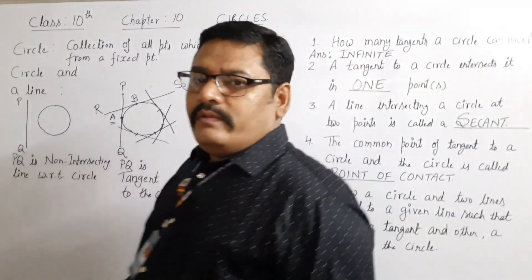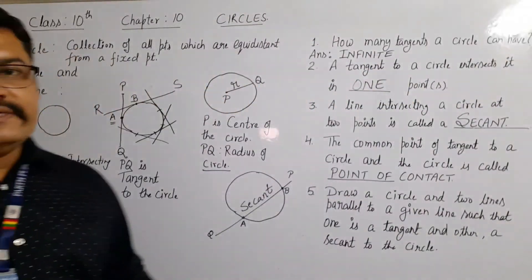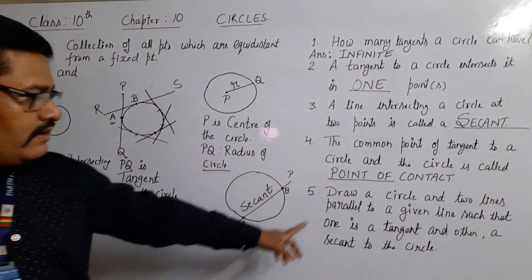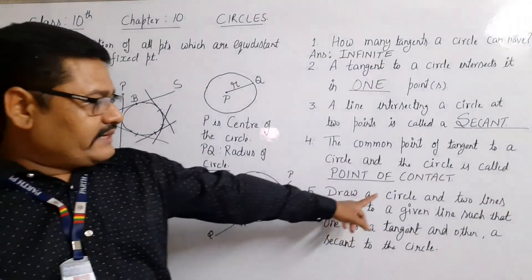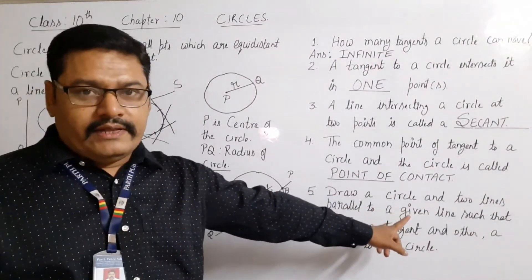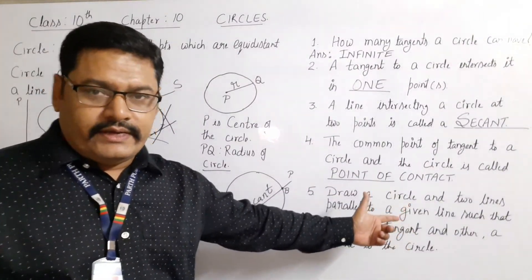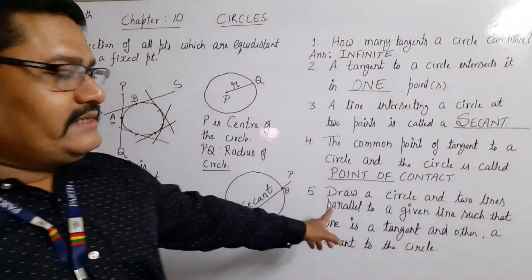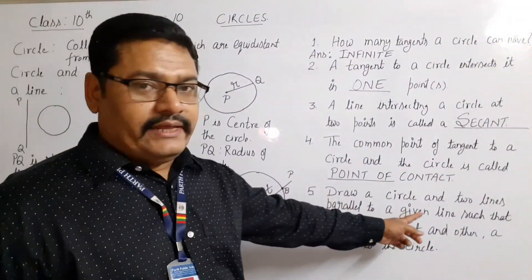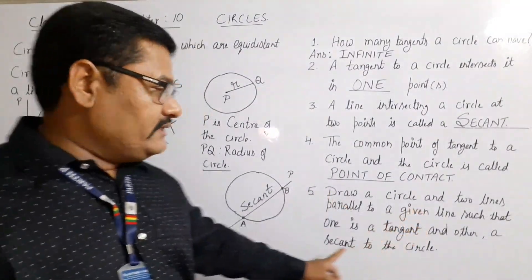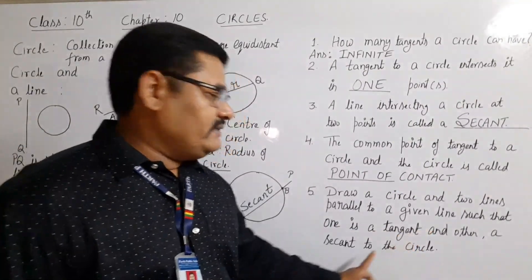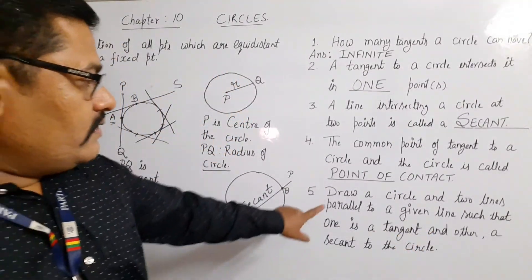Now there is one more question based on all three concepts: Draw a circle and two lines parallel to a given line, such that one is a tangent and the other is a secant to the circle.